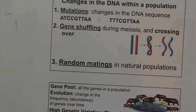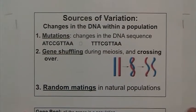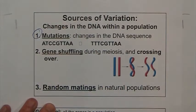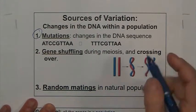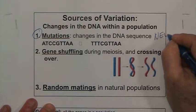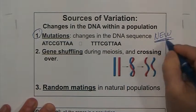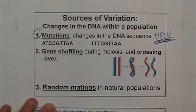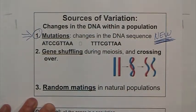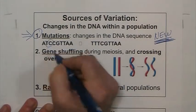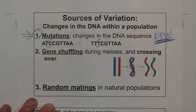Where does this variability come from? One source of variation — and this is actually the only source of new traits — is mutations. Mutations are the only source of brand-new traits, the only one. Mutations are changes in the DNA sequence of organisms — you have a C here where there was a T; that's a mutation.